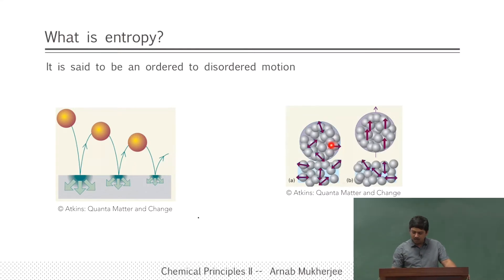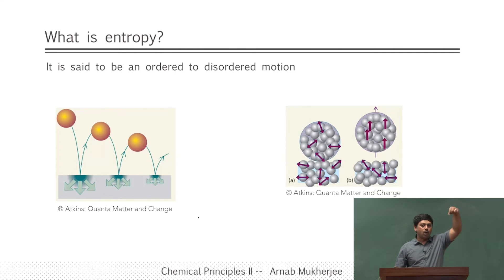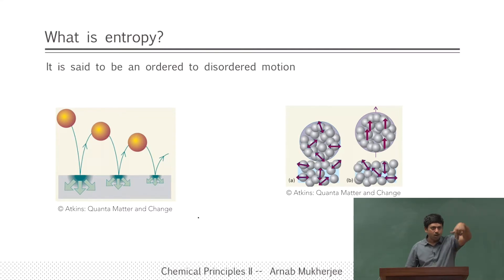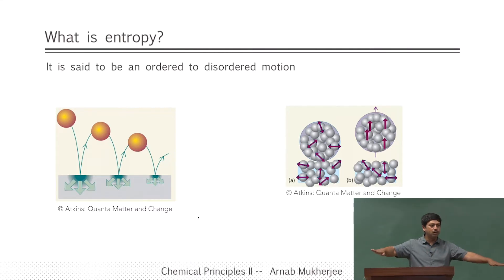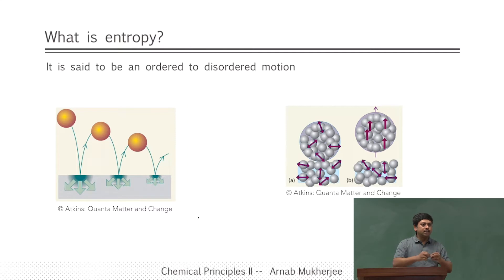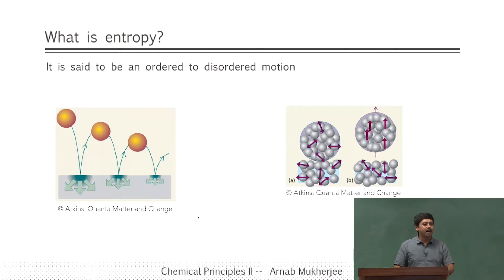This is taken from Atkins — two pictures showing the concept. Initially there are directed motions; once the ball hits the ground those motions become random and dissipate into the atoms of the floor. Unless all that dissipated energy comes back together in harmony and pushes the ball back up, you will not get the ball back. The probability of that happening is extremely small.